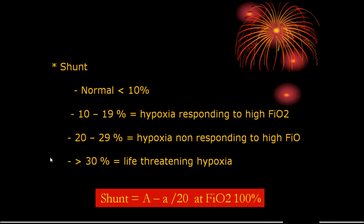Shunt can be measured simply by placing the patient on 100% oxygen, calculating the alveolar partial pressure of oxygen, measuring arterial PO2, and applying the shunt formula. If shunt is less than 10%, this is normal; 10–19% means hypoxia that responds to increased FiO2; 20–30% means hypoxia that will not respond to high FiO2 and requires recruitment maneuvers or bronchodilation; more than 30% means life-threatening hypoxia.